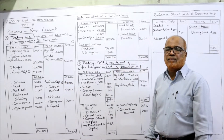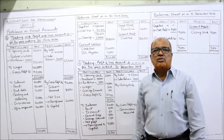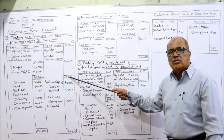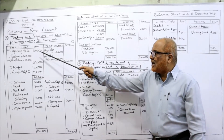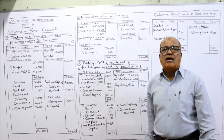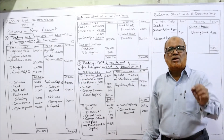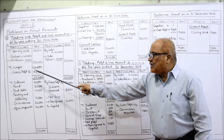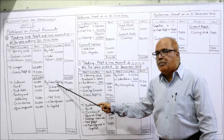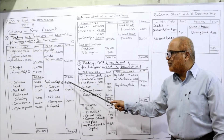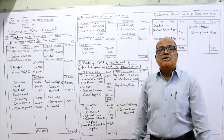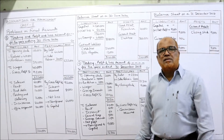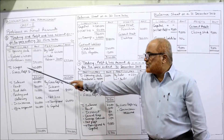Wages are forty thousand. Now take the total on the credit side: six lakh twenty-two thousand. From six lakh twenty-two thousand, minus one lakh, minus three lakh ninety thousand, minus forty thousand — you get ninety-two thousand as the gross profit carried down. Trading account is now complete. Bring that gross profit brought down to P&L account. Gross profit brought down — ninety-two thousand. The other income is only interest received — eight thousand.